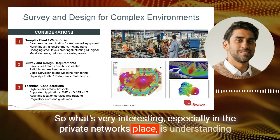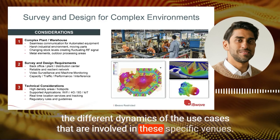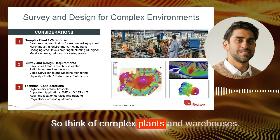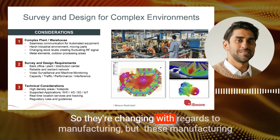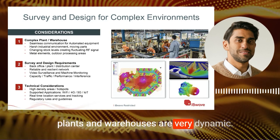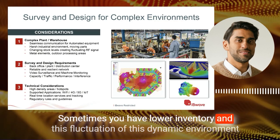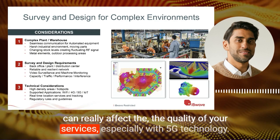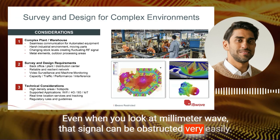What's very interesting, especially in the private networks space, is understanding the different dynamics of the use cases involved in these specific venues. Using an industrial setting as an example — think of complex plants and warehouses — these environments are very dynamic, changing with regards to manufacturing. Equipment is moving around, inventory fluctuates, and this dynamic environment can really affect the quality of your services, especially with 5G technology. Even with millimeter wave, that signal can be obstructed very easily.